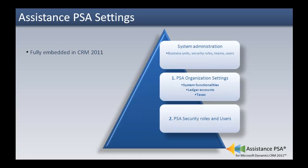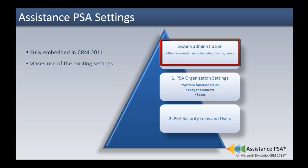Fully embedded in Dynamics CRM 2011, Assistance PSA makes use of the existing settings of CRM and only requires minimal additional configuration. Once you have installed the solution, you will only be left with defining the specific settings of your organization, as well as creating your security roles and users. Best practice will recommend doing so in the order displayed here. Now, let's go in Assistance PSA to start the configuration of your organization settings.